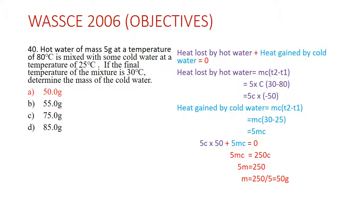One side will have a negative sign showing energy has been lost. To calculate the amount of heat, we use the formula: mass × specific heat capacity × temperature change (mcΔT). For the hot water, we need the mass, specific heat capacity, and temperature change. The hot water was initially at 80 degrees Celsius (T1) and came to the final temperature of 30 degrees Celsius (T2), so the temperature change is 30 − 80 = −50.